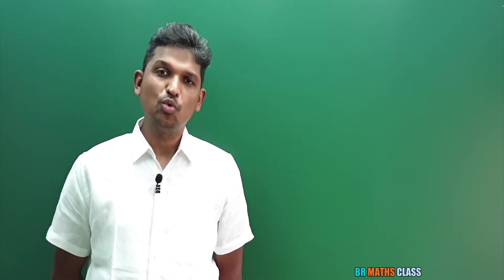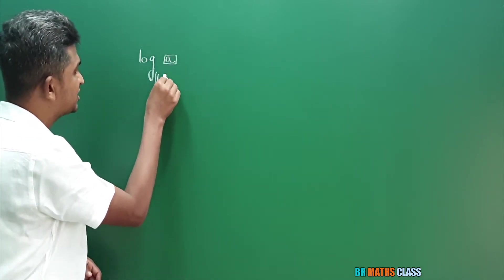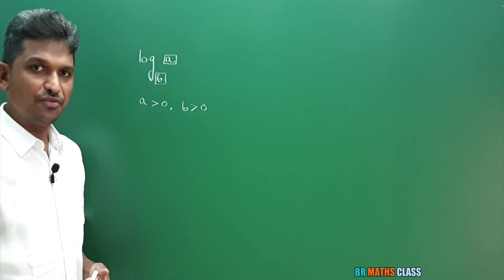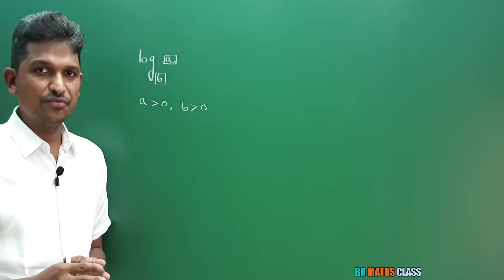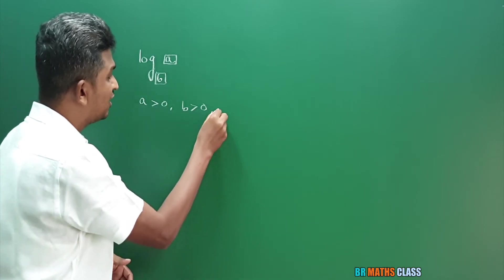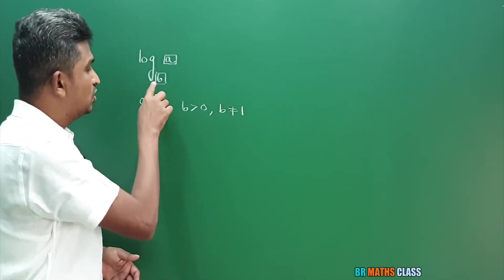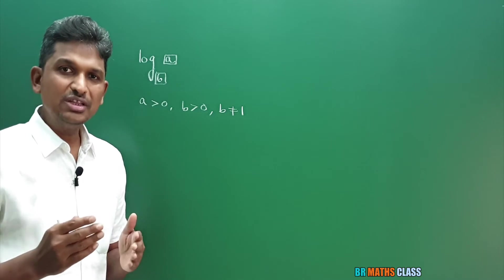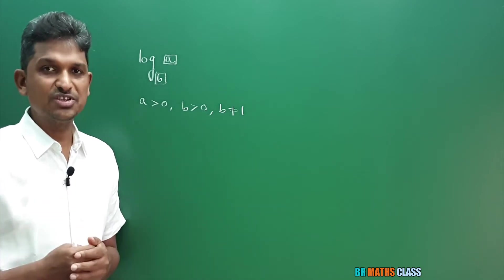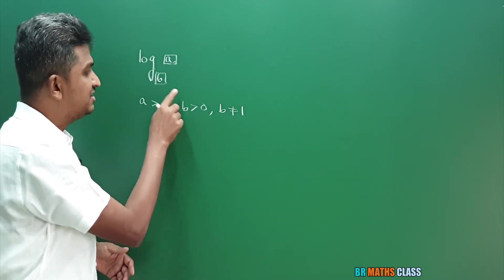Related to logarithm, what you need to know: log A base B is defined only when A and B both must be positive. A must be greater than 0 and B must be greater than 0. If A is 0 or less than 0, this function is not defined. Log A base B is defined only when A and B are positive, and B cannot be equal to 1. If B is equal to 1, then also this function is not defined.